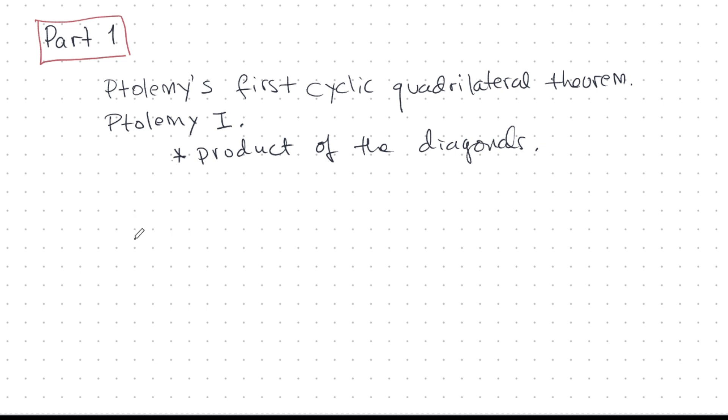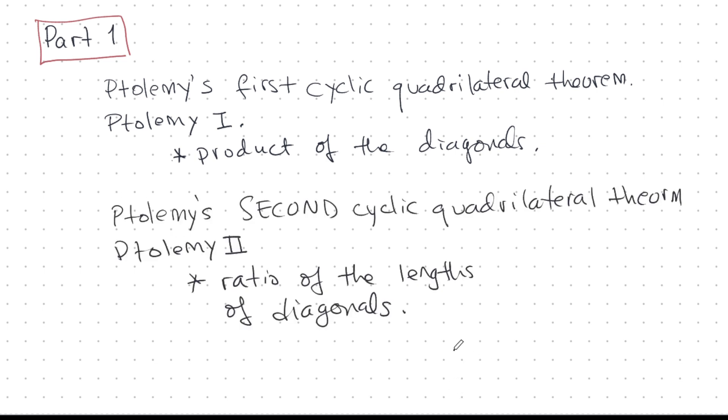Ptolemy II, however, has to do with the ratio of the diagonals. So we have this beautiful symmetry: Ptolemy I is the product of diagonals, Ptolemy II is the ratio, and in this video, I want to talk about Ptolemy II. This is the one that nobody studies, but it's actually very beautiful, and the proof is beautiful too, and I want to show you.